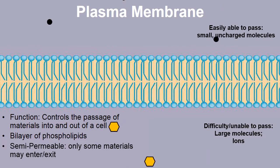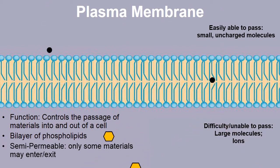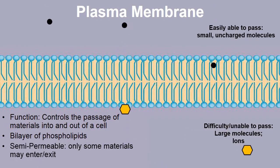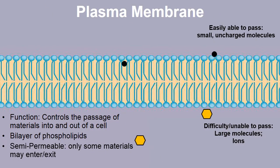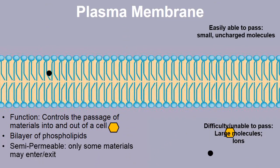Ions are atoms that have a charge. Glucose is a large molecule unable to pass freely through the plasma membrane. Sodium and chlorine are ions — atoms with a charge — and because of their charge, they're not able to freely pass through the phospholipid bilayer.